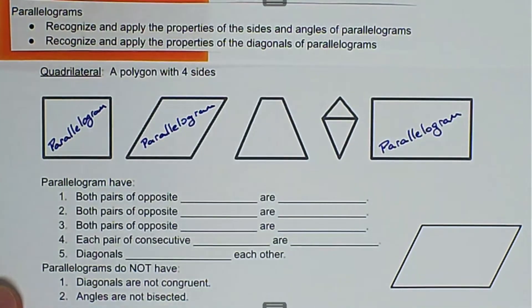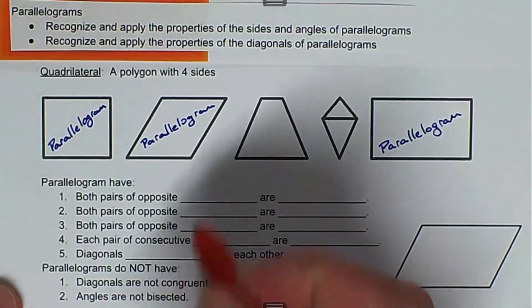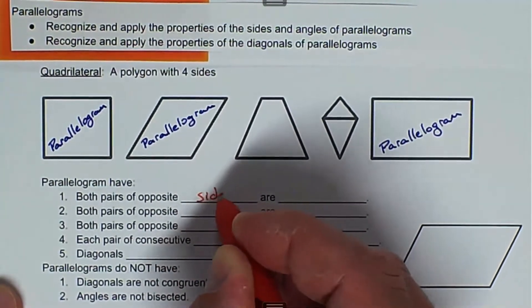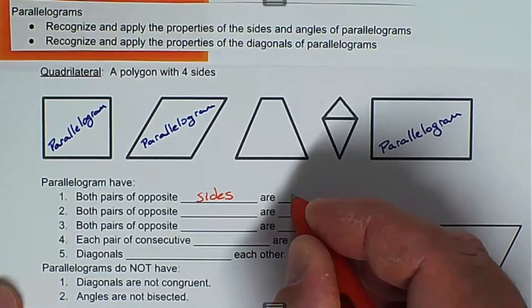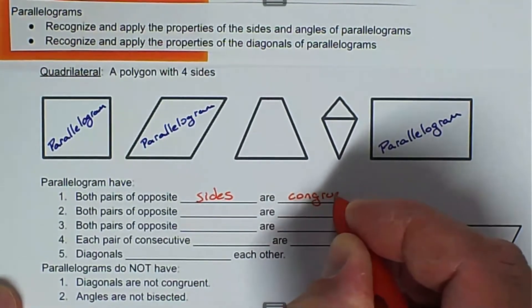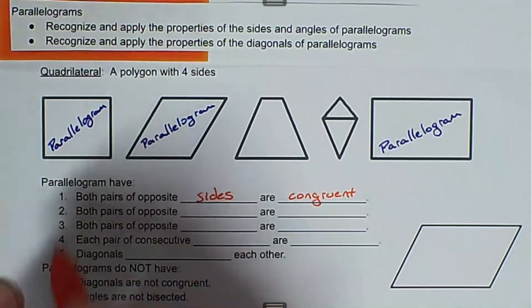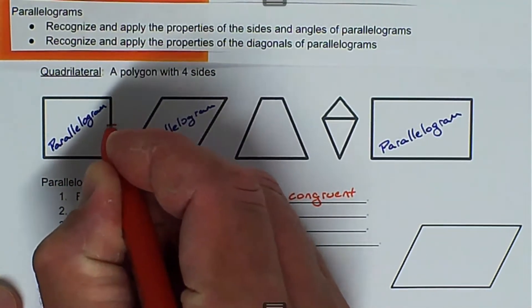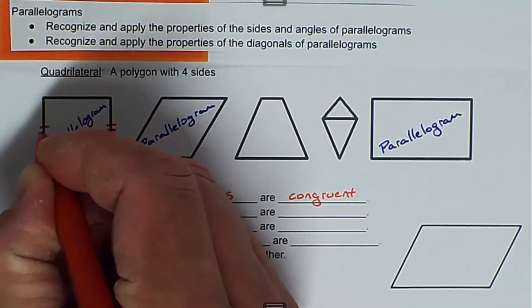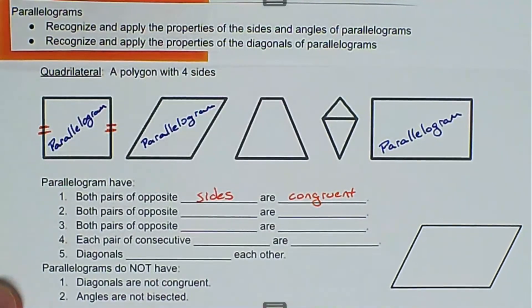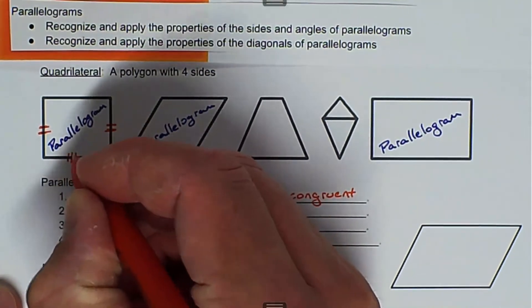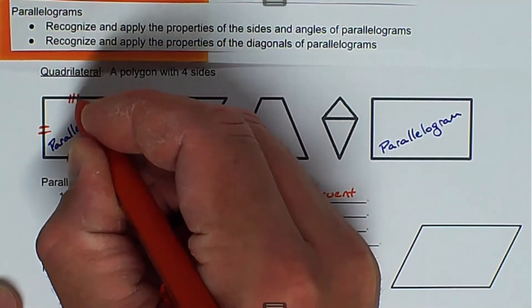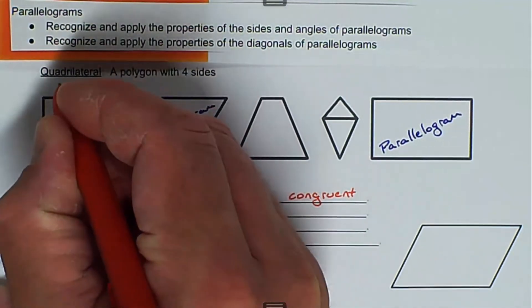So what does it mean to be a parallelogram? Both pairs of opposite sides are congruent. So we have this parallelogram right here — we're going to add tick marks to it. If we put two marks on the right side, we have to put two congruent marks on the left side. And then both pairs of opposite sides: this side has three marks, and this side has three. So this property is about sides being congruent.